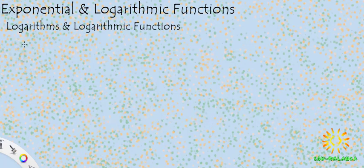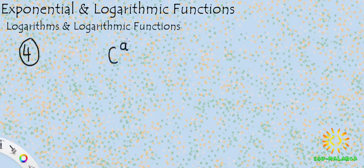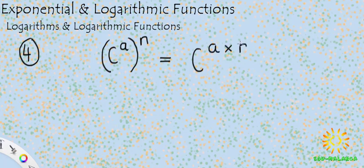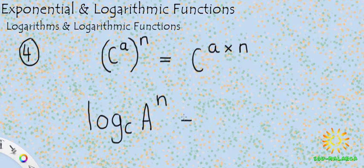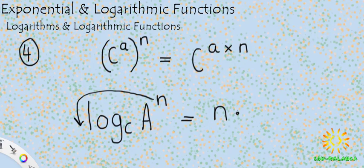The fourth law is associated with the power law of exponents. If you had c to the power of a, and raised the whole expression to the power of n, you get c to the power of a times n. With logarithms: log base c of (a to the power of n) equals n times log base c of a. You bring the exponent n down and multiply the whole expression by it. That is the fourth law of logarithms.